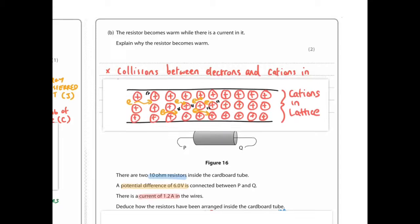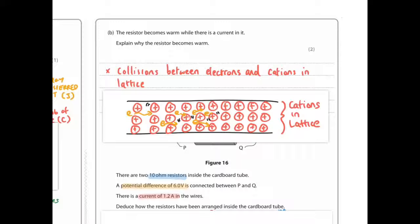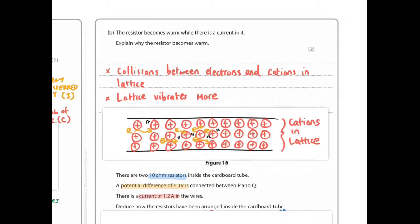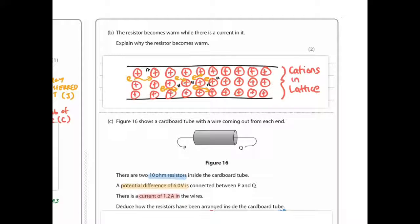The reason why this is a grade 9 is because of the way you have to explain it. You have to say there are collisions between electrons and cations in the lattice. You have to use the term lattice, which a lot of people wouldn't think to do. Then you have to say the lattice vibrates more. So this whole structure starts to vibrate more and more, which causes it to warm up. Remember, temperature is really a measure of the kinetic energy in the particles, or the average amount of kinetic energy in the particles. Using this language here, lattice, and lattice vibrates, many people wouldn't do that. So this is why it's supposed to be targeted at grade 8, grade 9 students.